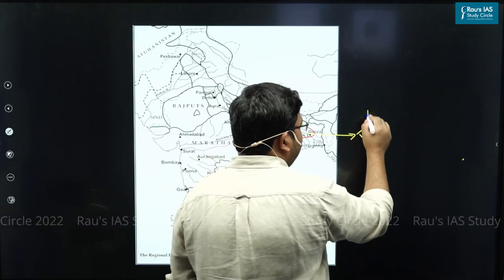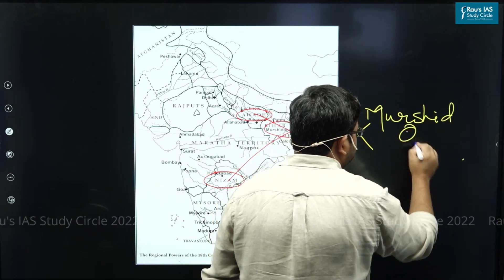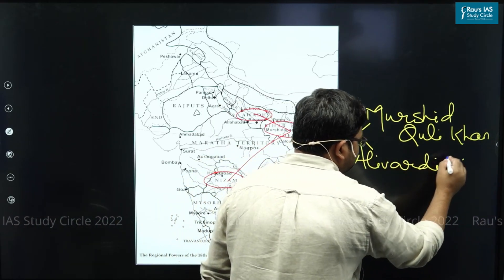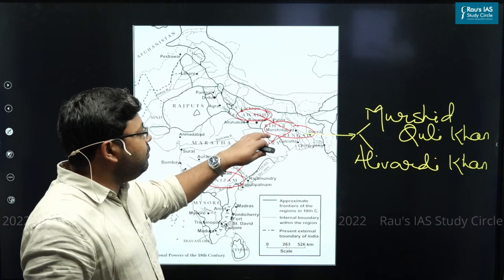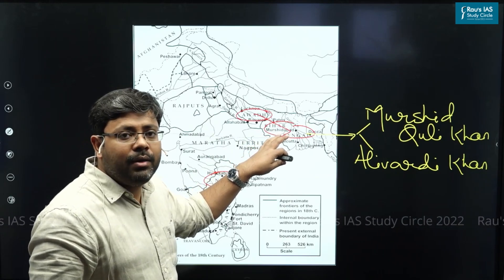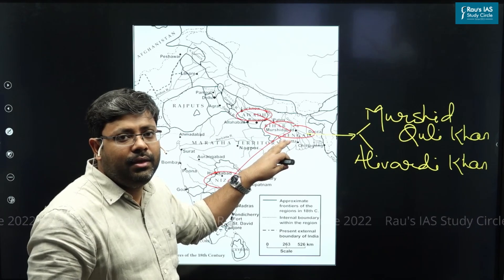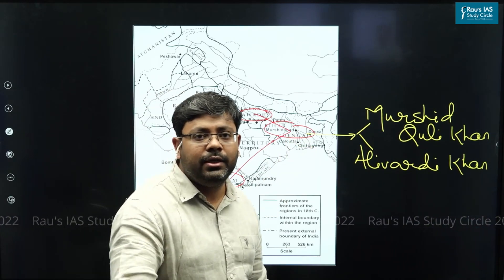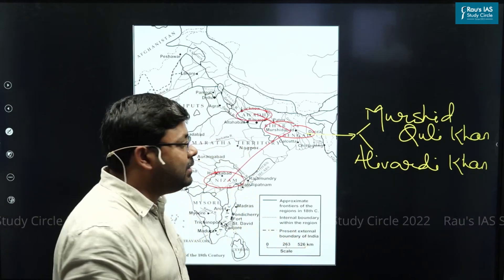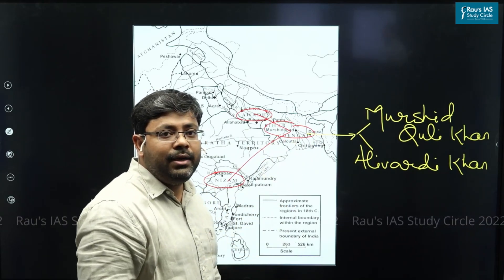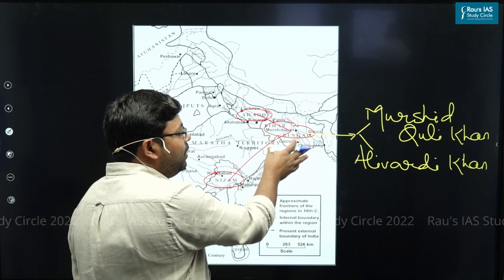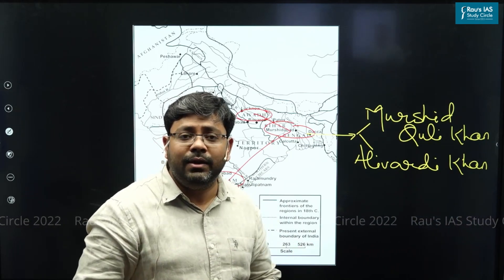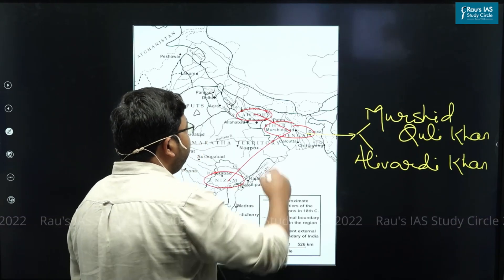The independent kingdom of Bengal was established by Murshid Quli Khan, and later Bengal became very powerful in the times of Nawab Aliwardi Khan. That time Bengal comprised the areas of Bihar, Bengal, and parts of Odisha, as well as West Bengal and parts of Bangladesh. Bengal became very rich and prosperous because of excellent trade as well as good agriculture due to alluvial soil. That is why the British started their political base from Bengal, as it gave them good access to resources and a very populous area to fill their army.